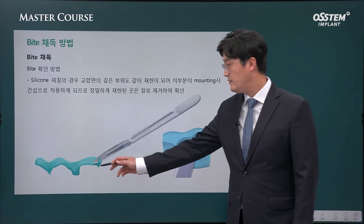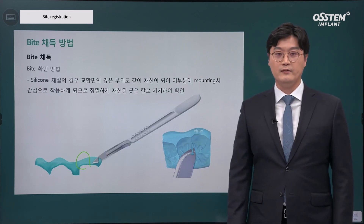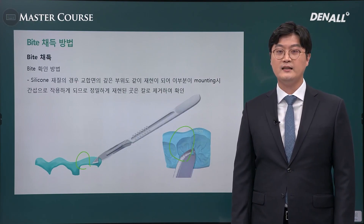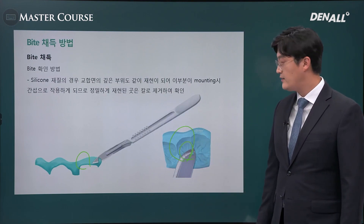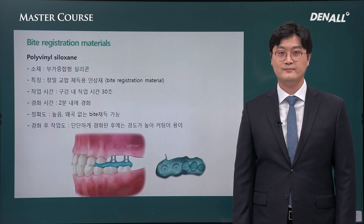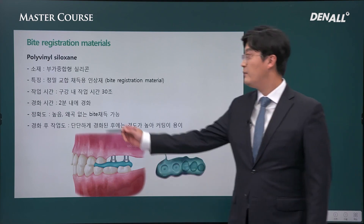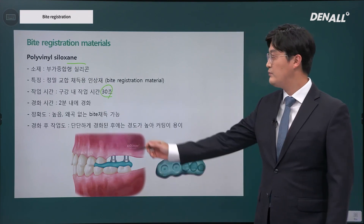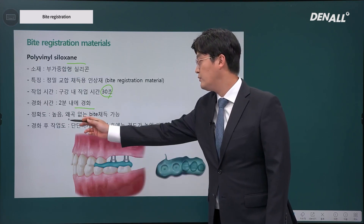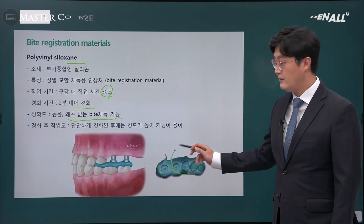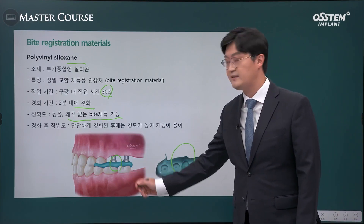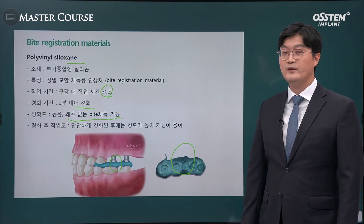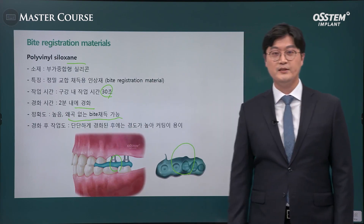After taking bite registration, the bite material needs to be trimmed. This is because polyvinyl siloxane bite impression material has high detail reproducibility, so if you put it in the plaster model, there could be space. If it has high detail reproducibility, it's better to trim with a blade. We mostly use polyvinyl siloxane because it's very convenient — it only needs 30 seconds to work orally, becomes harder within two minutes, and has minimal distortion. But as mentioned, it's elastic, so it's not recommended to keep it thick.